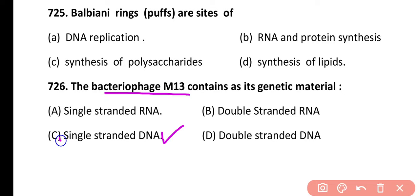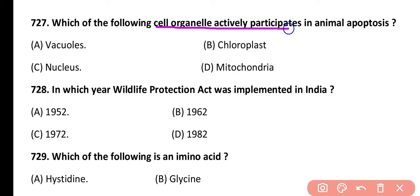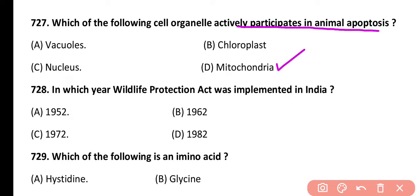Question 727. Which of the following cell organelles actively participate in animal apoptosis? Vacuole, chloroplast, nucleus, or mitochondria. Correct answer is option D. Mitochondria are the cell organelles that actively participate in animal apoptosis.